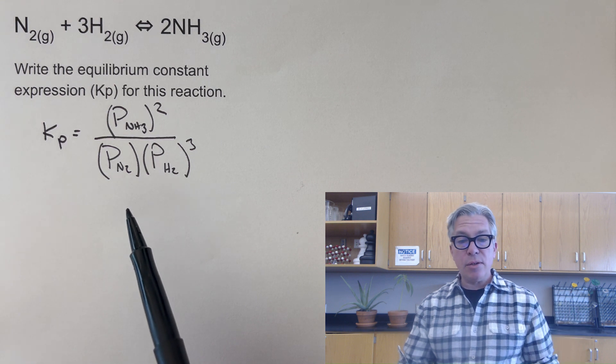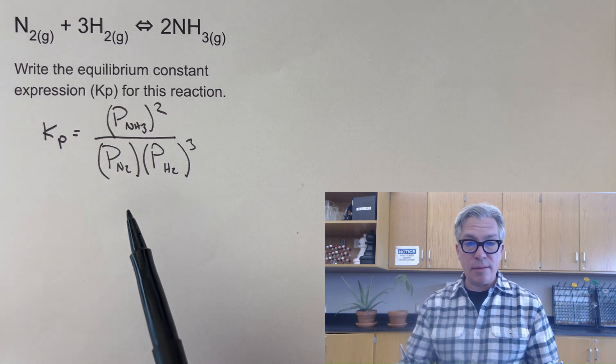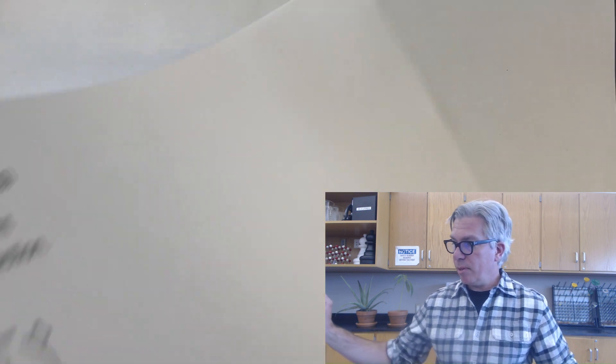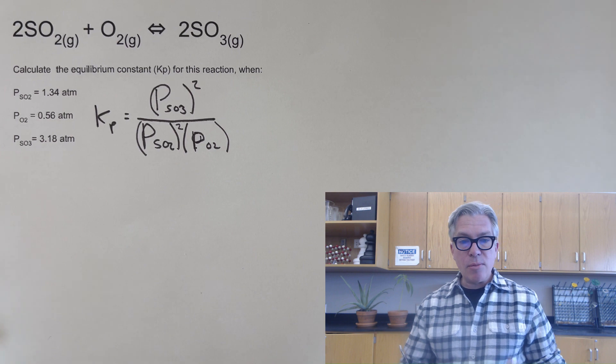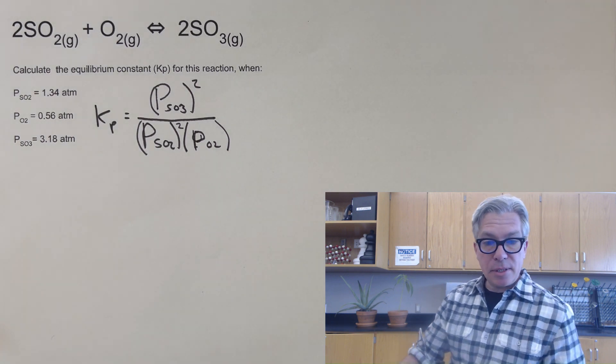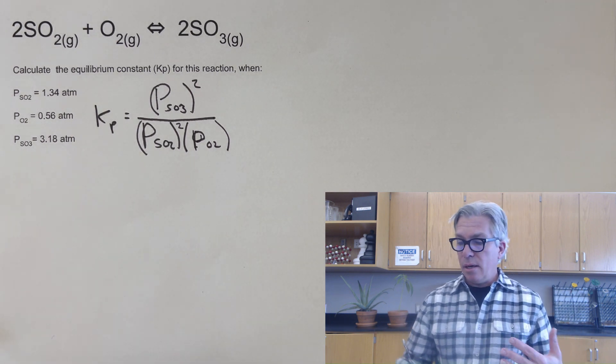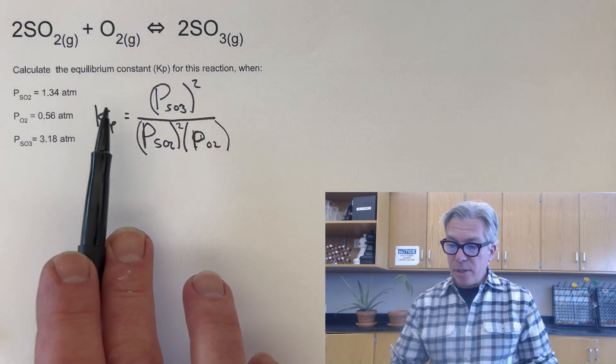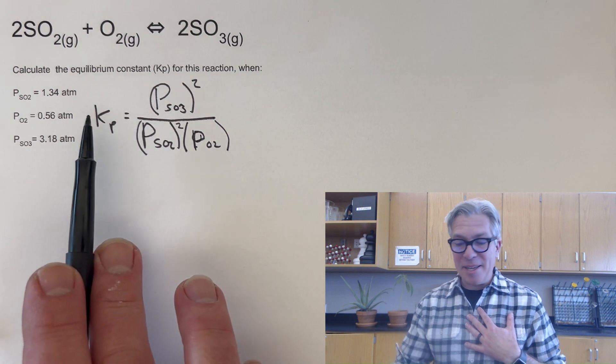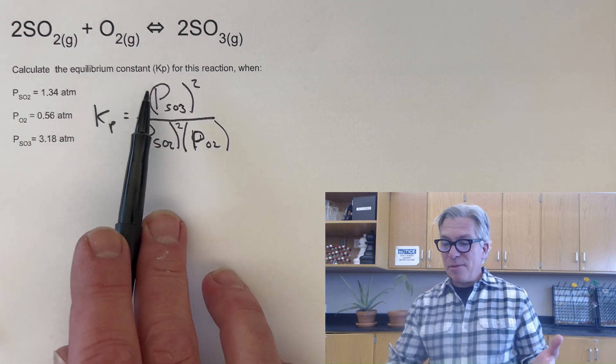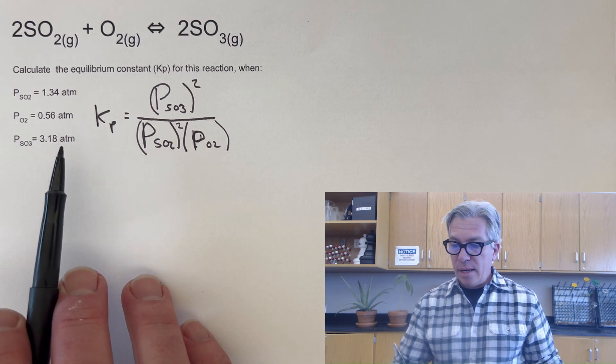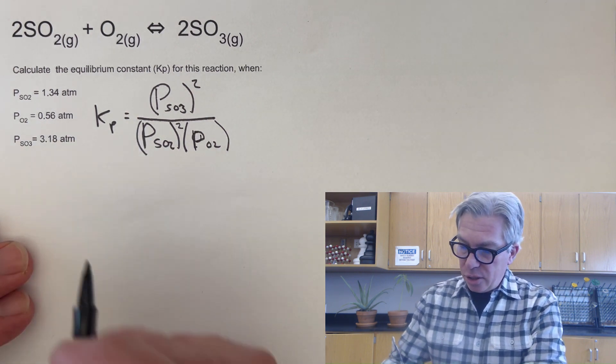So once we have our equilibrium constant expression written correctly by convention, we can start doing things like calculating equilibrium constants. So I'm using the same reactions for all three steps today, so we don't have to write new ones. Just keep that first one handy that you did. Calculate the equilibrium constant Kp for this reaction when now we have pressure data. And so I've got my expression and now I just need to, just like the Kc values, we're going to plug in what we know.